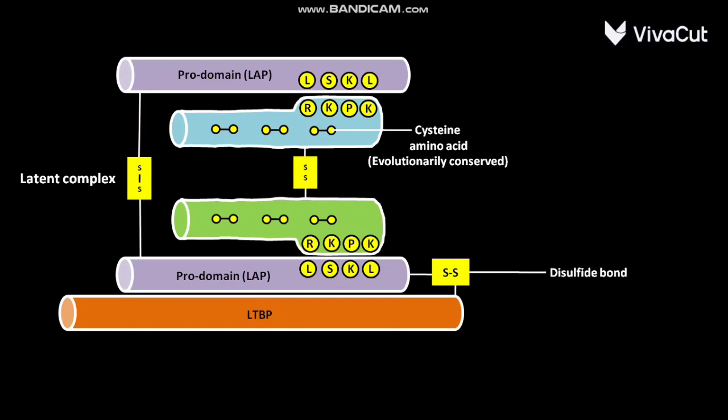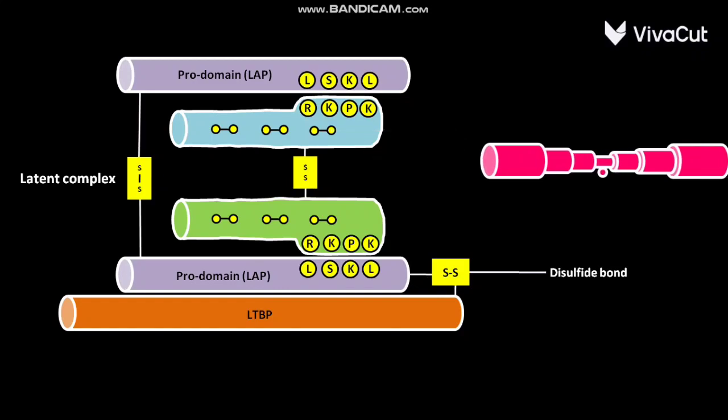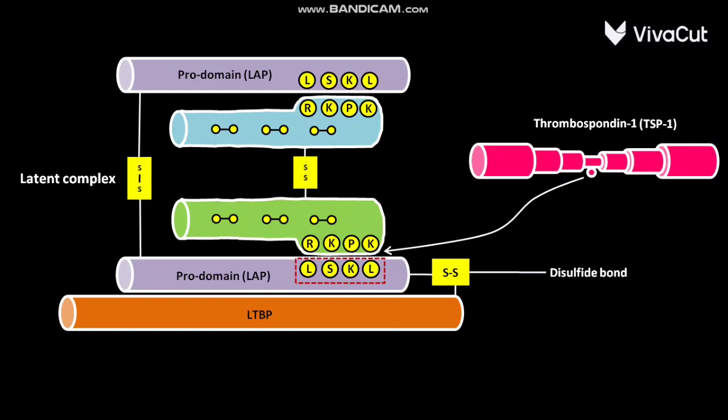The latent complex is stored in the extracellular matrix. Now, extracellular matrix protein called thrombospondin-1 or TSP-1 binds to the L-SKL amino acid sequence in the pro domain or LAP,